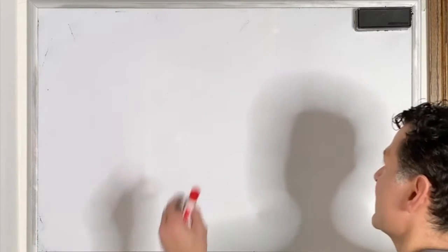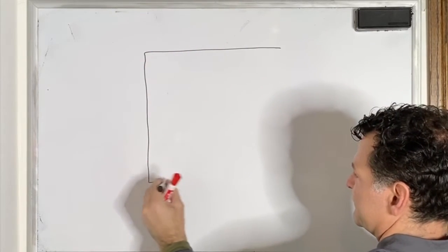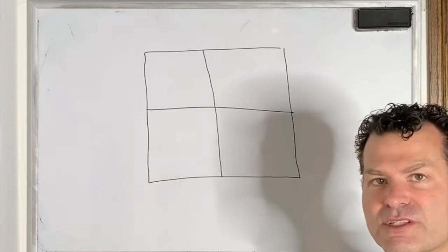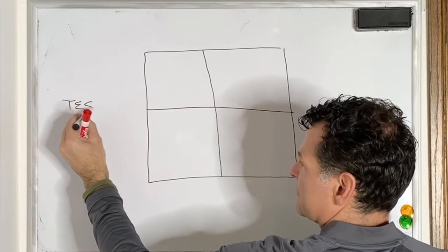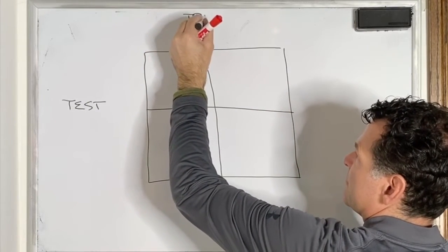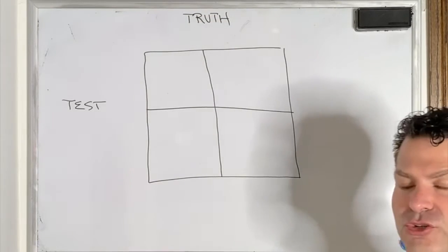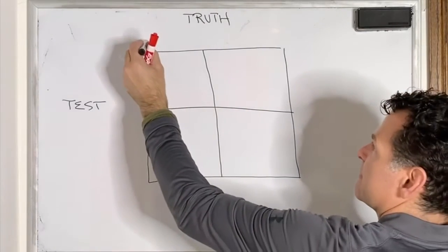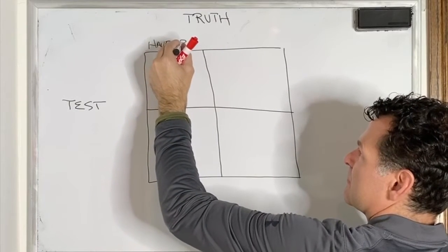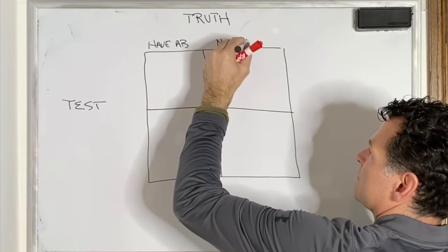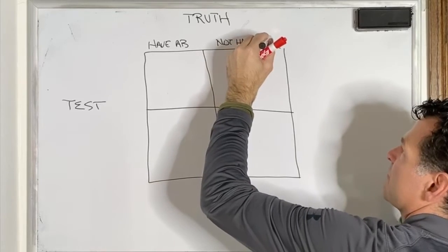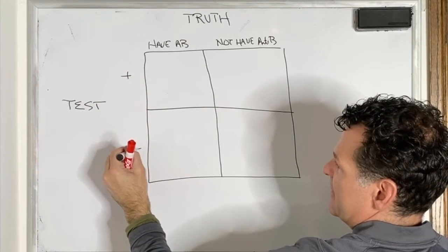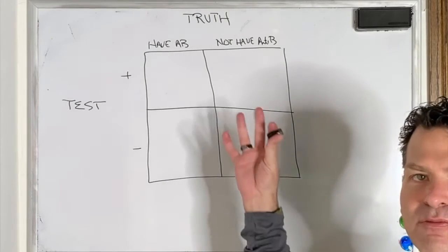The easiest way to describe this is to draw a grid. The two parts of this grid are your tests and the truth. So the truth would be, do they actually have the antibodies or do they not have the antibodies? And then the test is, is it a positive test or is it a negative test? For each test, we really have four options.